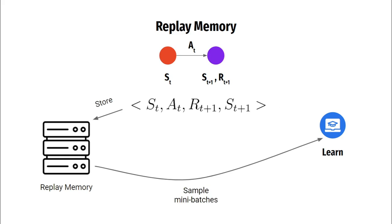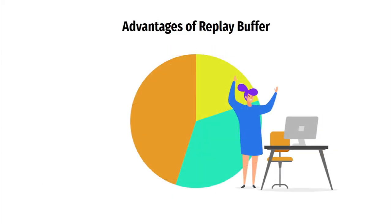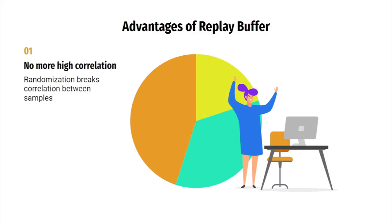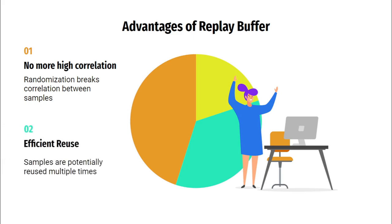This simple trick helps alleviate all kinds of problems. The first problem it solves is high correlations: online learning directly from consecutive samples is inefficient due to high correlations between them. Randomly selecting transitions from the replay buffer breaks these correlations. The second problem it solves is inefficient reuse: the online case throws out a transition after its update, but storing it in the buffer allows it to be reused multiple times to update the network, increasing the efficiency of learning.